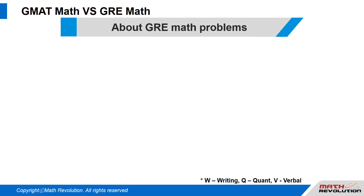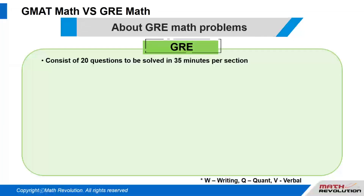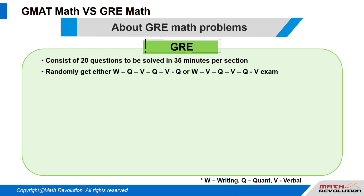About GRE math questions: the GRE math test consists of 20 math questions that must be solved within 35 minutes per section. Students randomly get either a writing, quant, verbal, quant, verbal, quant format — or a W-V-Q-V-Q-V format. With a W-Q-V-Q-V-Q exam, a student needs to solve 20 problems per section, for a total of 60 problems.